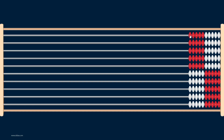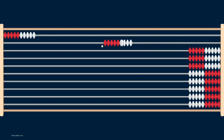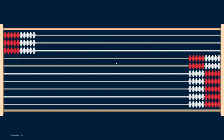Basically, I can slide beads on this Rekenrek just like I would on a normal Rekenrek. I can slide one at a time or multiple beads at a time, and I can use this to model a variety of problems — from place value to addition, subtraction, multiplication, and division.